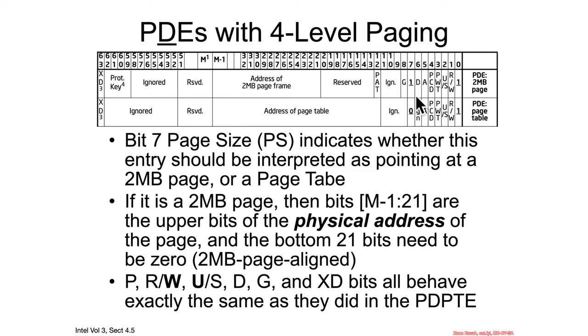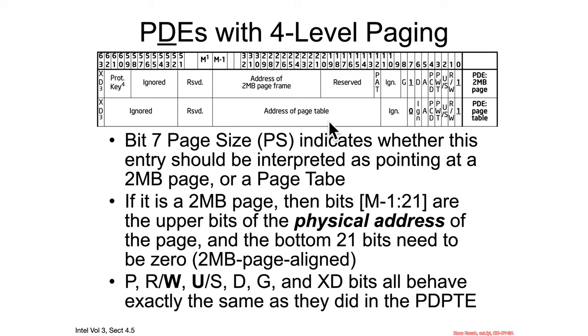For PS, page size equal one, we've got something that has a two megabyte page frame. So it's a large page — not a four kilobyte page. So physical address of a large page. PS equals zero, it's going to point at another table.